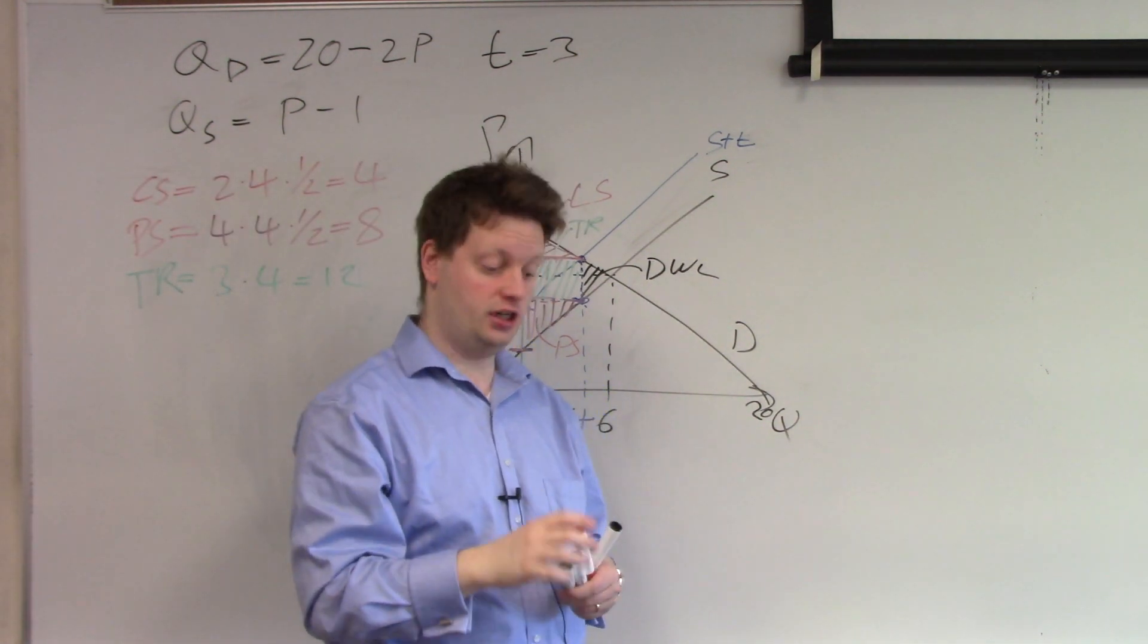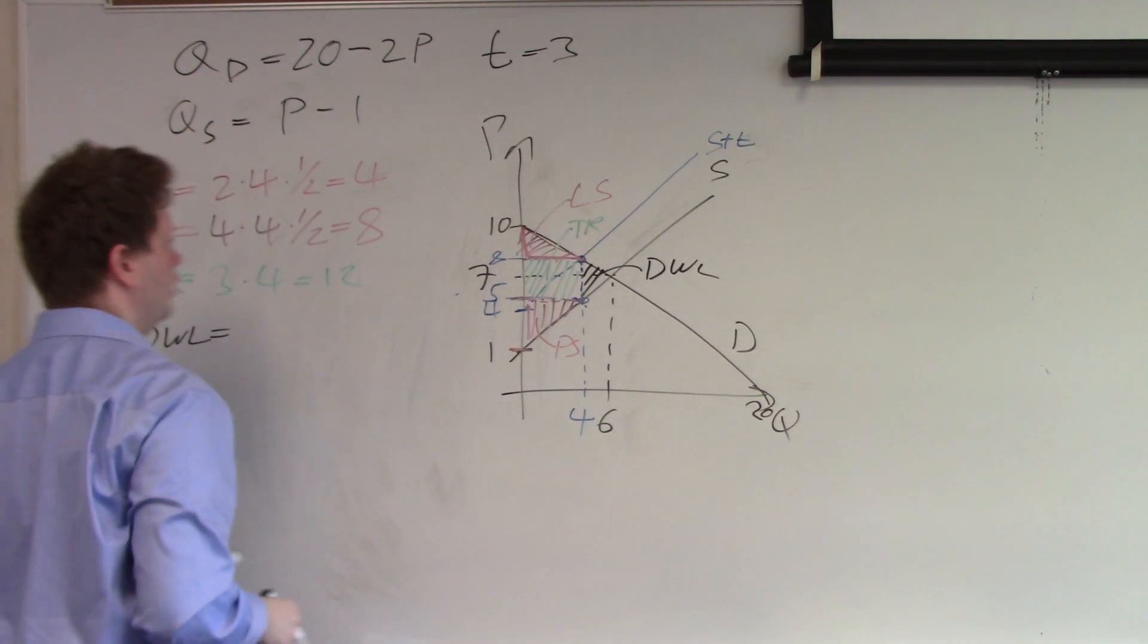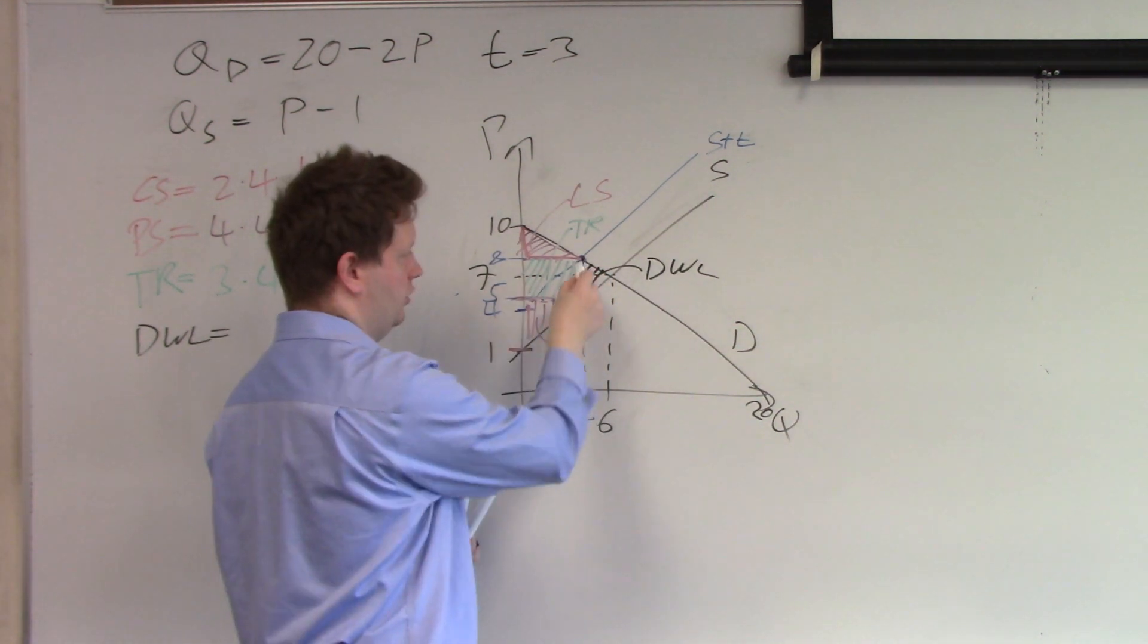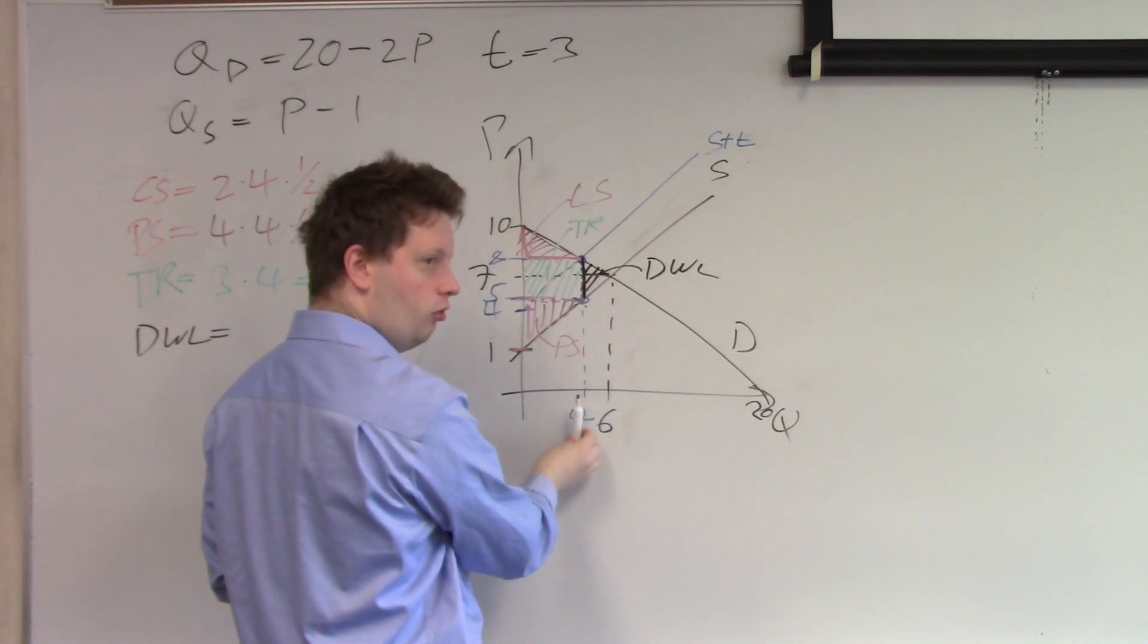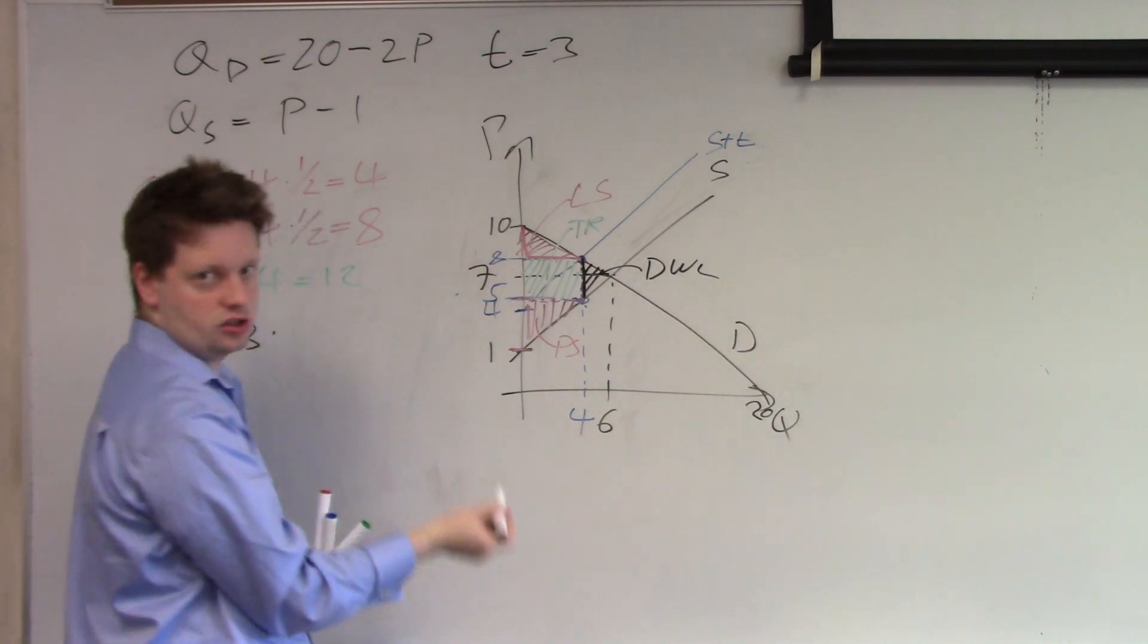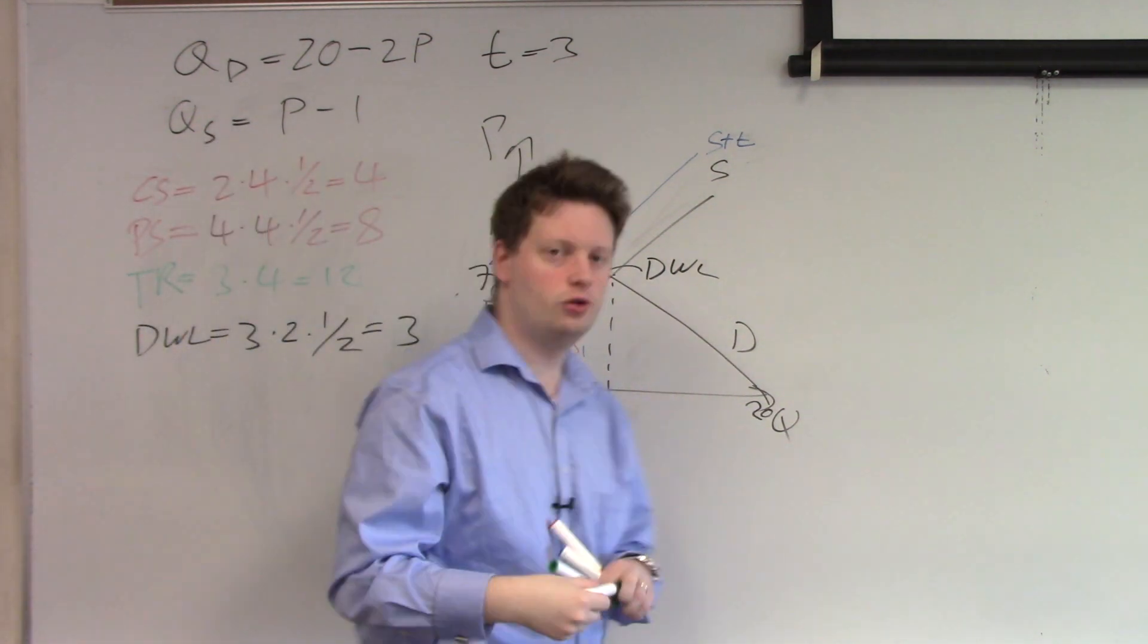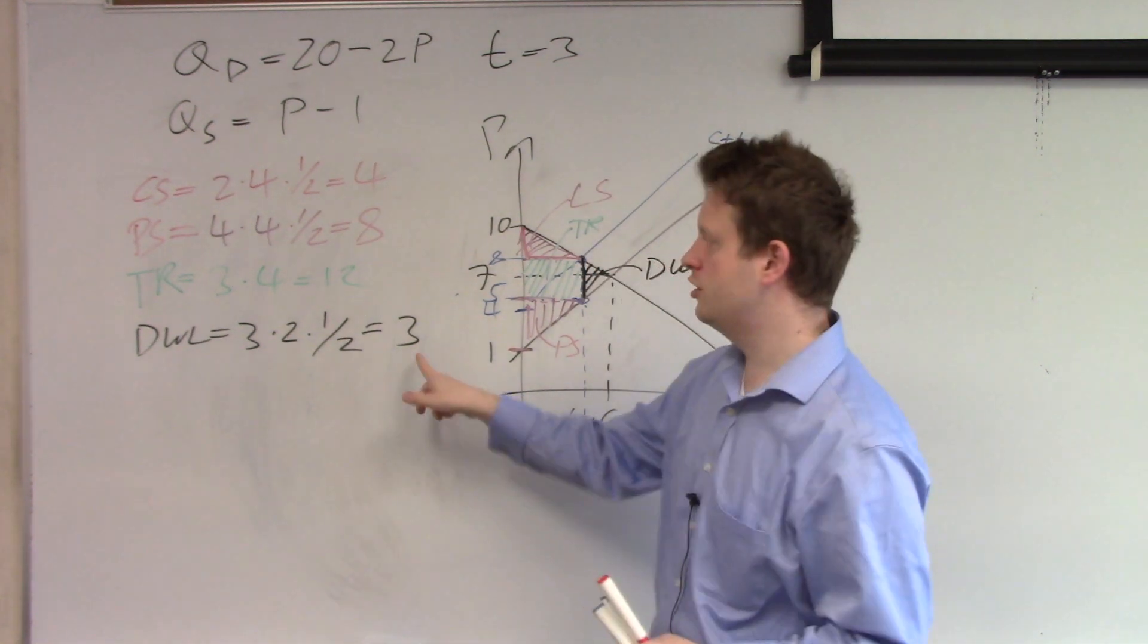And last but not least, deadweight loss. We have this length here is 3, the amount of tax between 5 and 8. And we have this distance here, and that's from 4 to 6. So we have 3 times 2. Times 1 half because it's a triangle. And we get 3. So the deadweight loss or welfare loss from imposing this tax is 3.